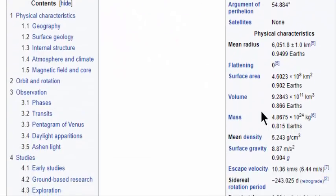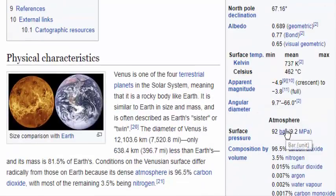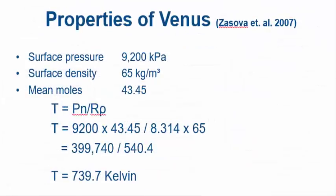Okay, is that correct? So let's say 740. We're predicting 740 or 739.7. They say 737. So we're two Kelvin out. That's not bad, is it? Pretty good.